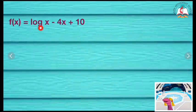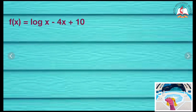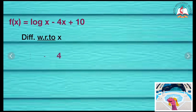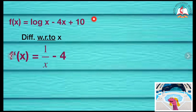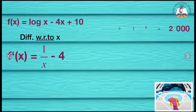f of x is equal to log x minus 4x plus some constant. If I am differentiating with respect to x: logarithm's differentiation is 1 by x, and x differentiation is 1. So the answer is 1 by x minus 4. The constant's differentiation becomes 0.